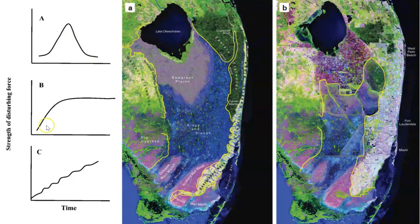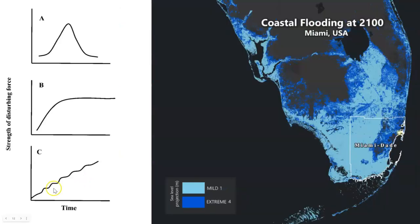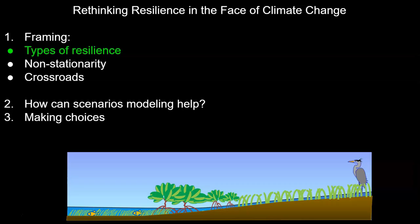In a press disturbance, the stressors don't go away — for example, conversion to agriculture and the roads and canals in the remnant Everglades. And then there's a ramp disturbance, which does not stabilize but rather continues to intensify over time with no end in sight. Trying to hold the Everglades stationary in the face of sea level rise and warming may not be possible. Our concept of resilience is poorly suited to a non-stationary world.